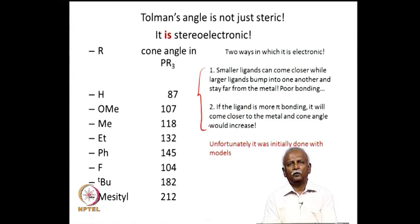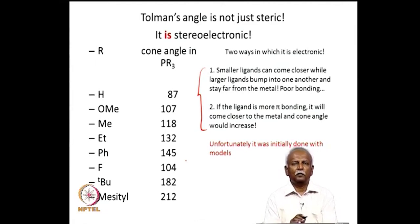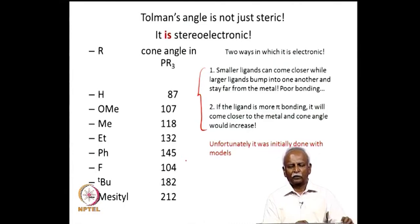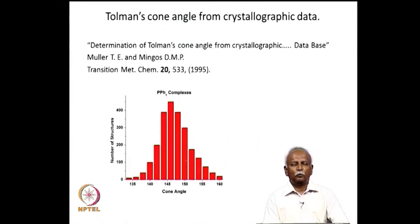Because of the complexity, one has to approximate with a fixed metal-ligand distance. The distance between the metal and ligand is always fixed at 2.28 Å and the cone angle is measured with a protractor. This was originally done with physical models, but later, with many crystal structures available, it became possible to derive the angle from crystallographic data.